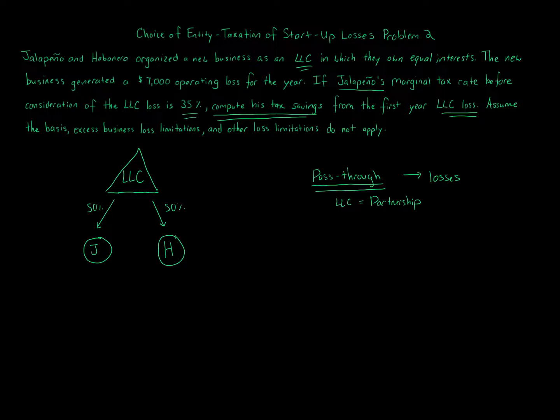So because we have the pass-through, the loss to the owners here from the LLC, which we're told is a $7,000 operating loss, the question is how much of that $7,000 operating loss goes to Jalapeno. We're focusing on that. Now, the facts also tell us to ignore any basis, excess business loss, or other limitations like Code Section 465 at-risk rules or 469 passive activity loss rules. We basically ignore the loss limitations because even though a loss might pass through to an owner, there might be a limitation that doesn't allow them to take it and has to carry over for certain reasons.